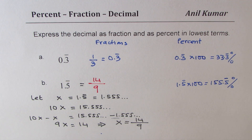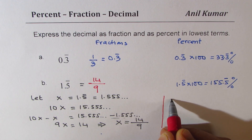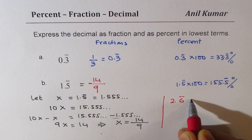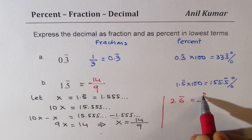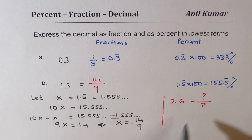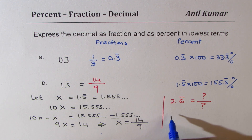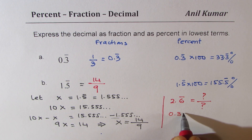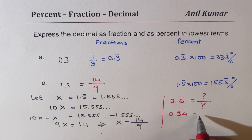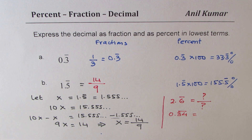Feel free to write your comments and share your views. Here are a few practice questions: if you have 2.6 recurring, can you write this as an equivalent fraction — something over something? Also, what happens if you have two recurring digits, for example 0.34 recurring — what is this equivalent to as a fraction? Try these out and write them as your comments.